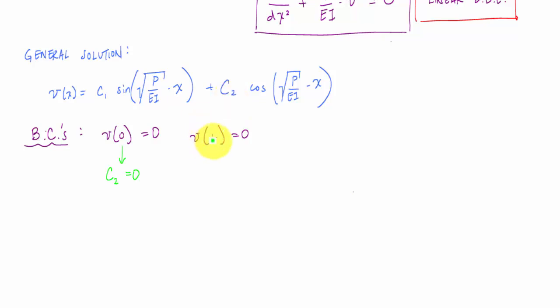And then when I substitute this V of L equal to zero, knowing that C2 is zero, I would get V of L is equal to, and there are two possibilities for this solution. I could say that C1 equals zero, but this is a trivial solution. It's meaningless. If both my constants are zero, that means nothing is happening. And really, there's no load on it, right? It's just useless. The column is straight. Or this whole term right here could equal zero.